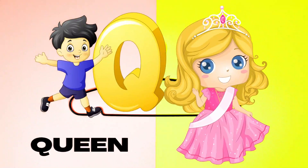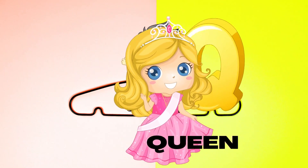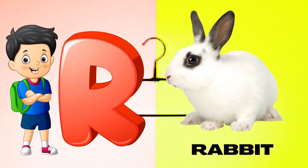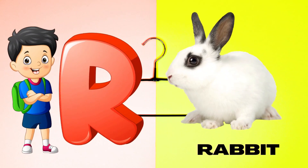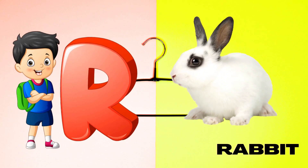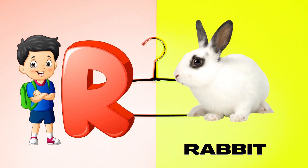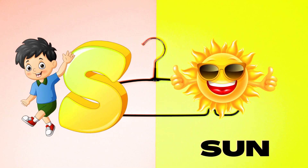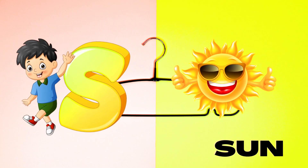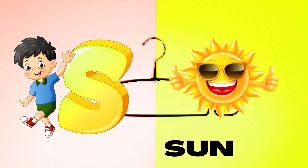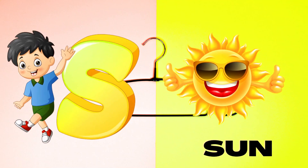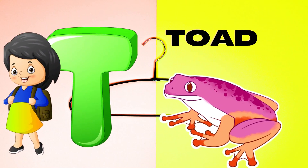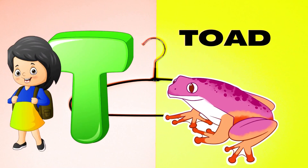Q is for Queen, Q-Q-Queen. R is for Rabbit, R-R-Rabbit. S is for Sun, S-S-Sun. T is for Toad, T-T-Toad.